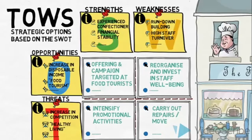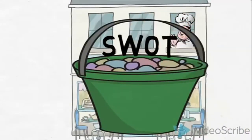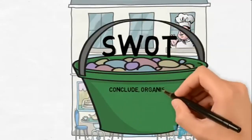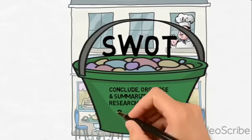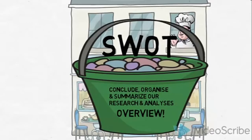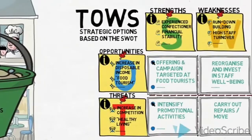Many more strategic options could be generated in a TAOS. But for the purpose of this video, we have created just a few to serve as an example. The SWOT is a useful tool to conclude, organize and summarize our conducted research and analysis. It provides us with a good overview of what our findings mean to the French Café. And the TAOS is a useful tool for taking the next step of generating strategic options — possible actions we can take based on our findings.